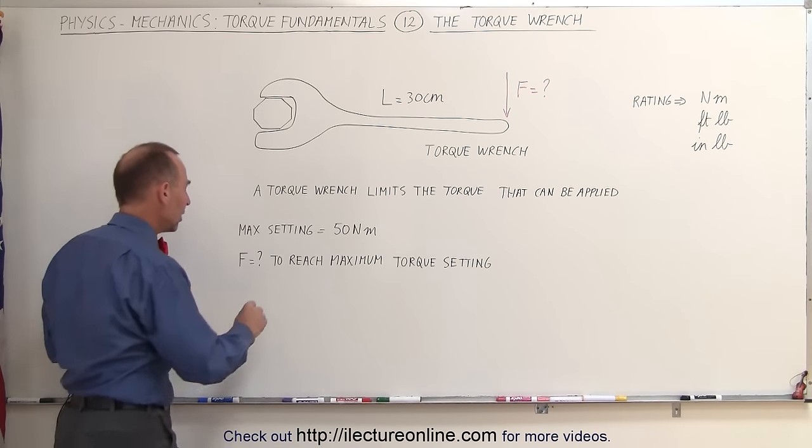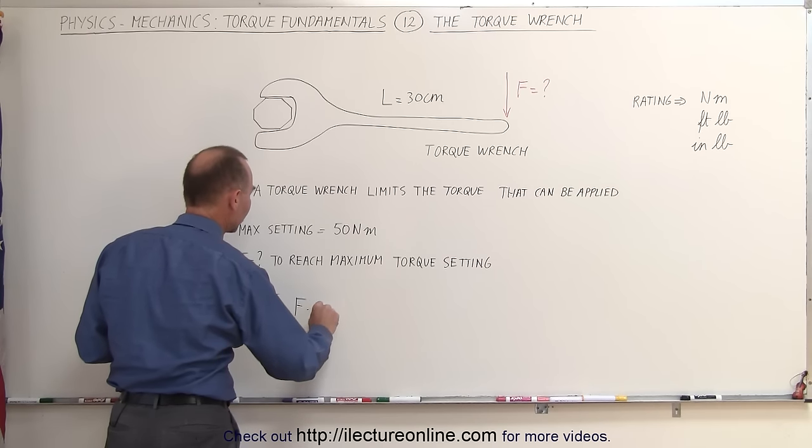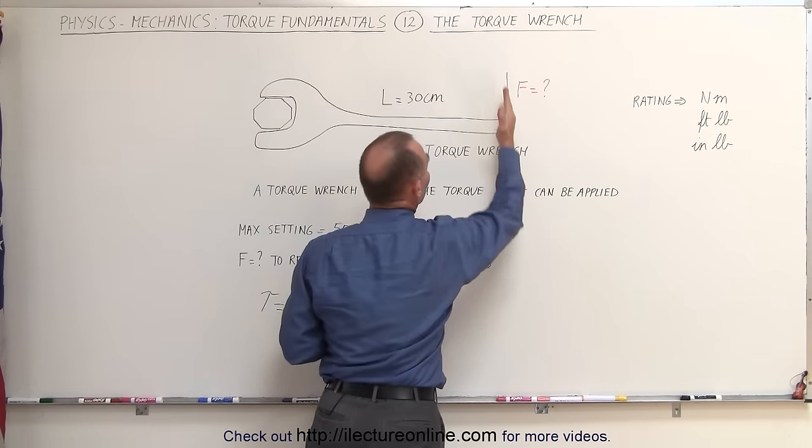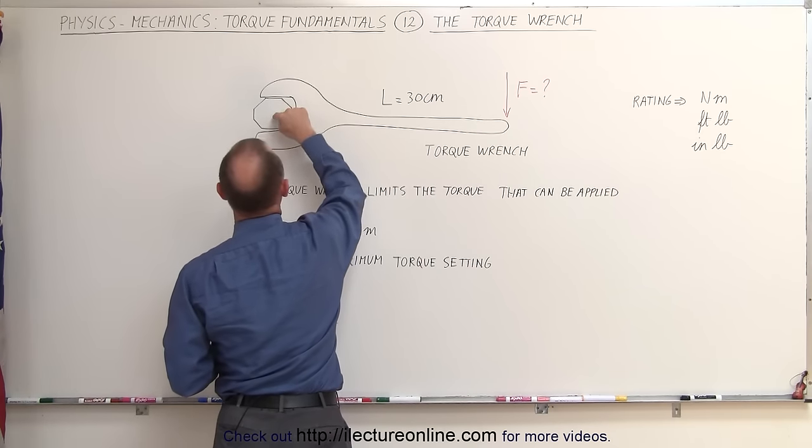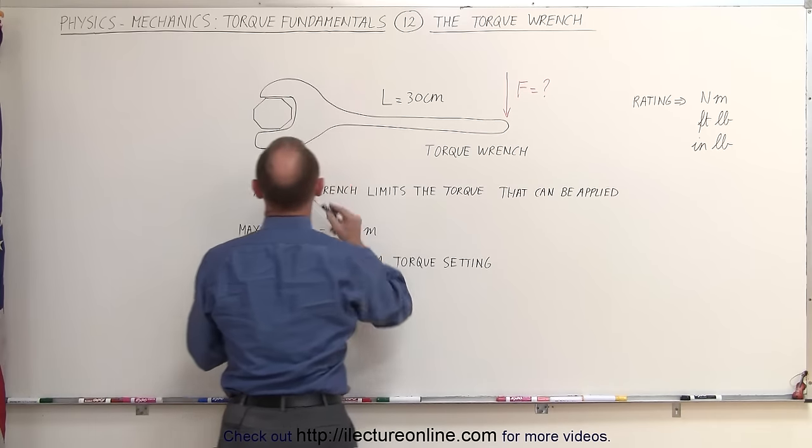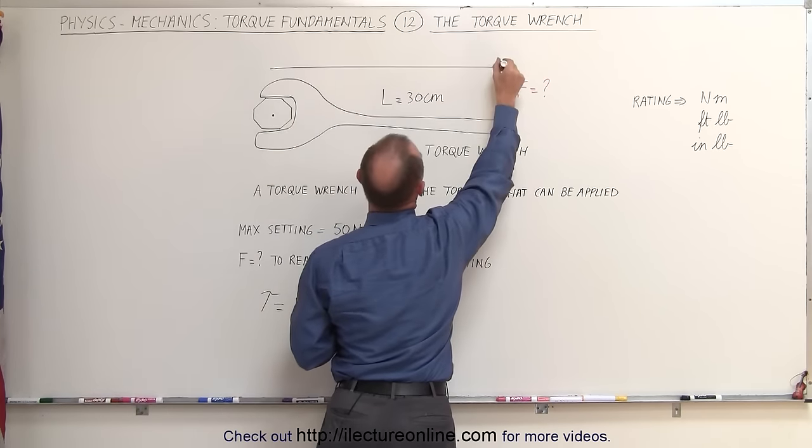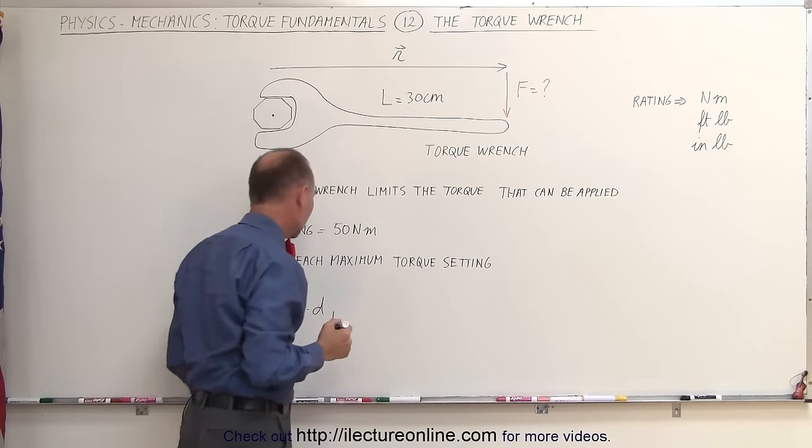So we go ahead and write the equation down that the torque is always equal to the force times the perpendicular distance. In this case, you can see that the force is acting perpendicular to the position vector from the point of rotation to where the force is acting. So this would be the point of rotation and this here would be the position vector. This would be your R vector, which is in this case the length of the wrench.